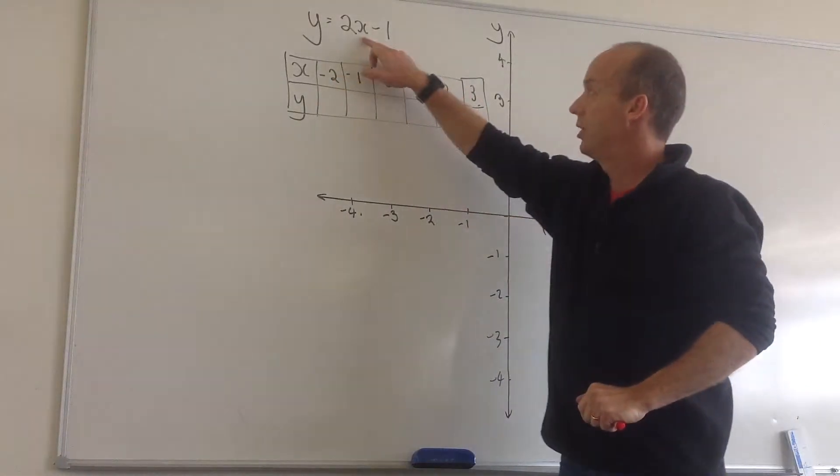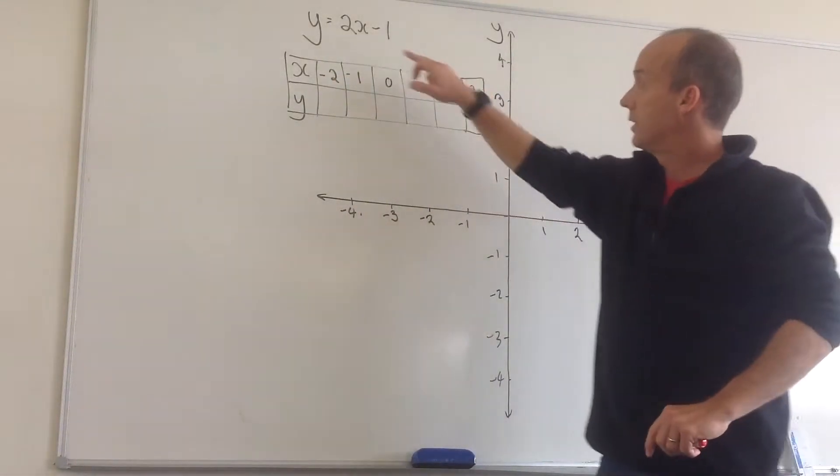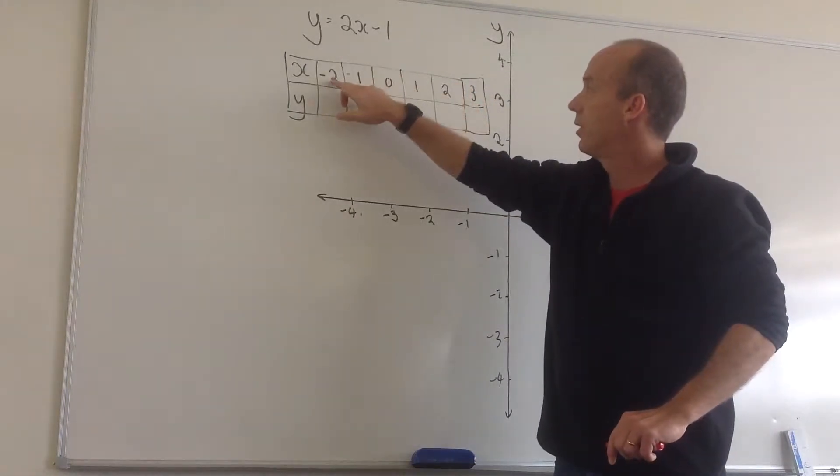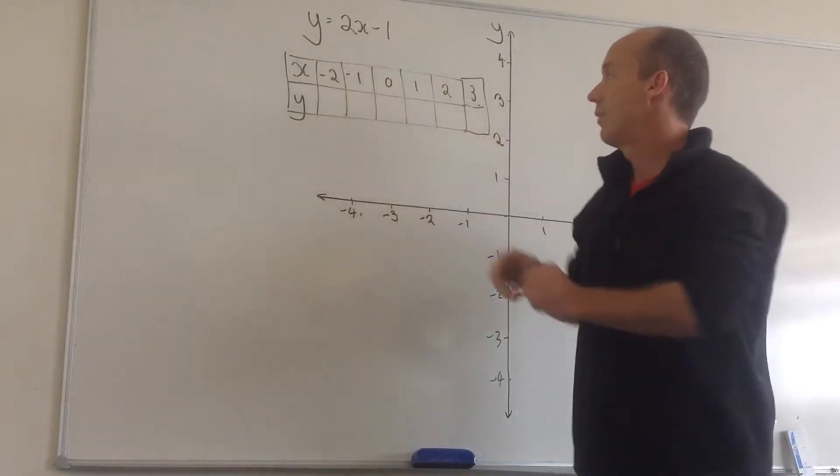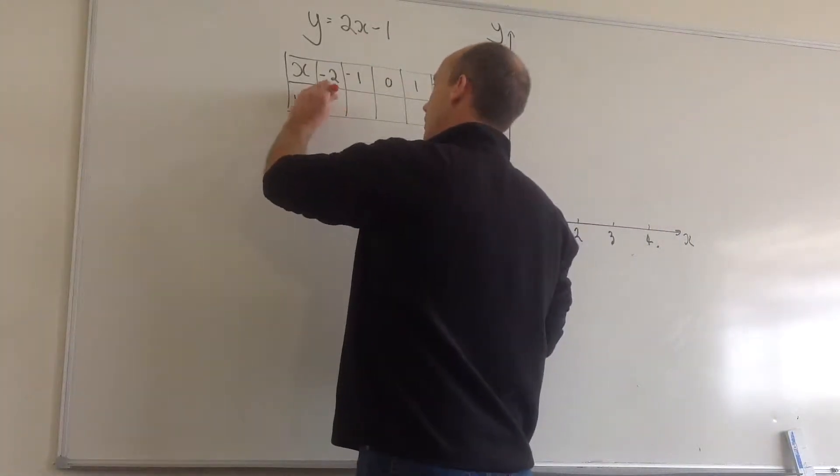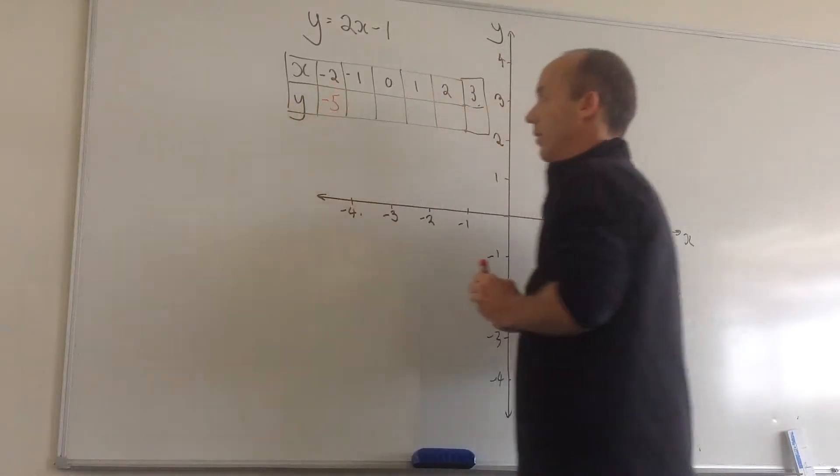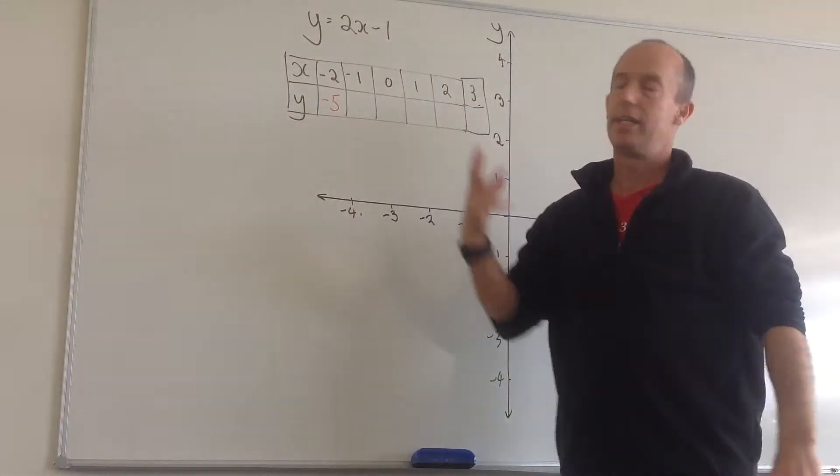So I do that by substituting into this equation. So instead of x, I'm going to put in minus 2. This will become 2 times minus 2, which is minus 4. Take away 1 is minus 5. So I'll write that value in. So the first thing we should do is fill in our table.